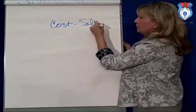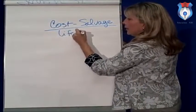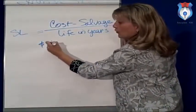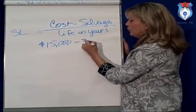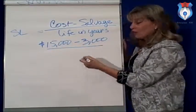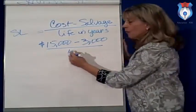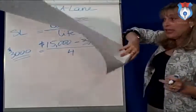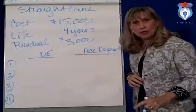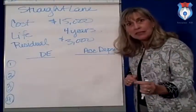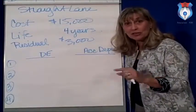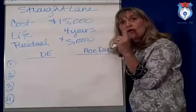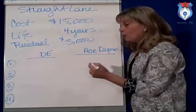With straight-line depreciation, it is simply the cost minus the salvage over its life in years. So for straight line (SL): cost is fifteen thousand, minus the salvage or residual value of three thousand, over the useful life of four years — that gives twelve thousand divided by four, or three thousand dollars per year. At the end of each full year of ownership, we make the adjusting entry: debit depreciation expense and credit accumulated depreciation. At the end of year one, we debit depreciation expense and credit accumulated depreciation for three thousand dollars.